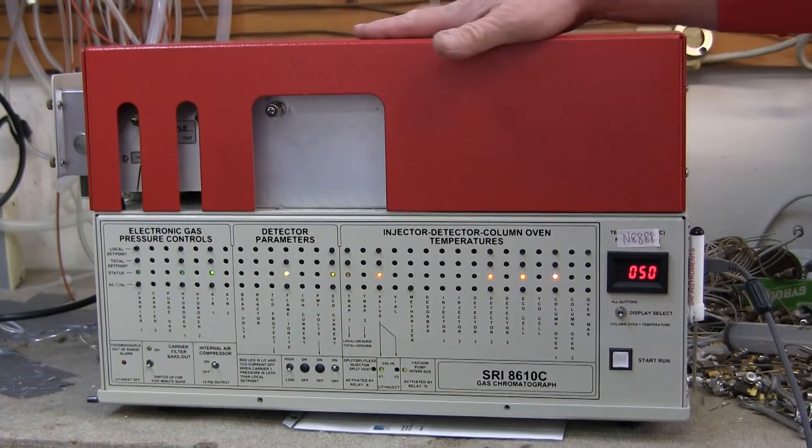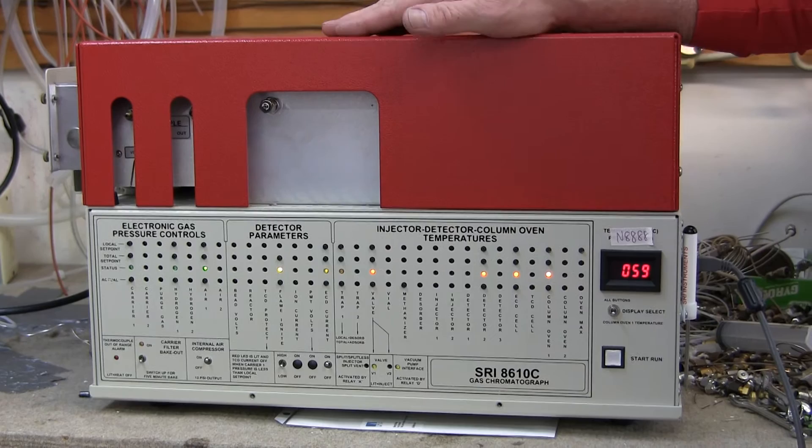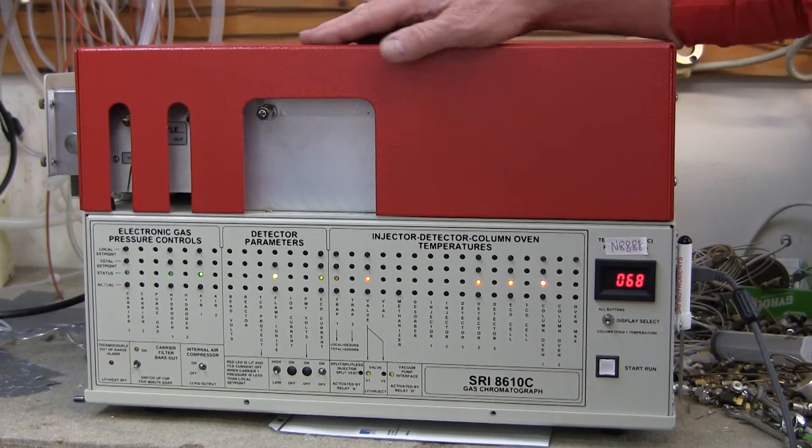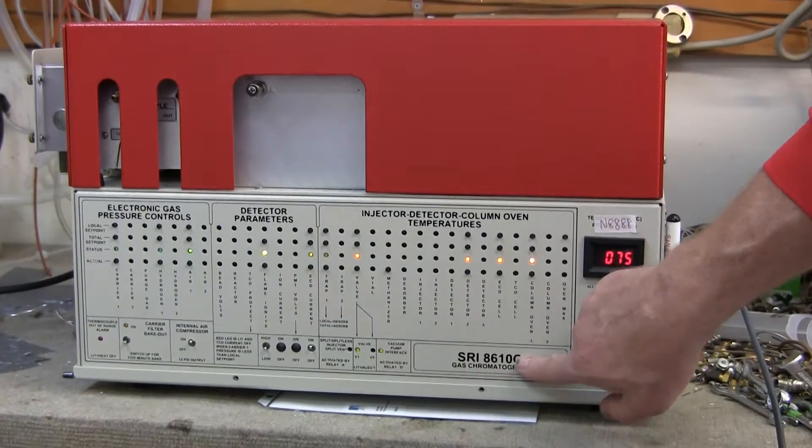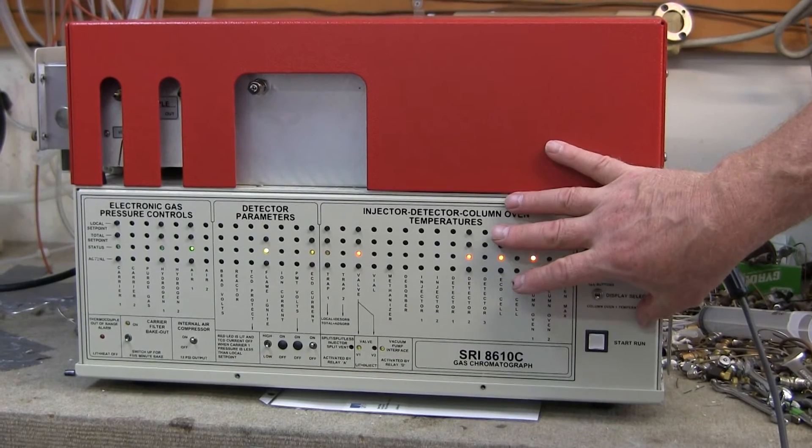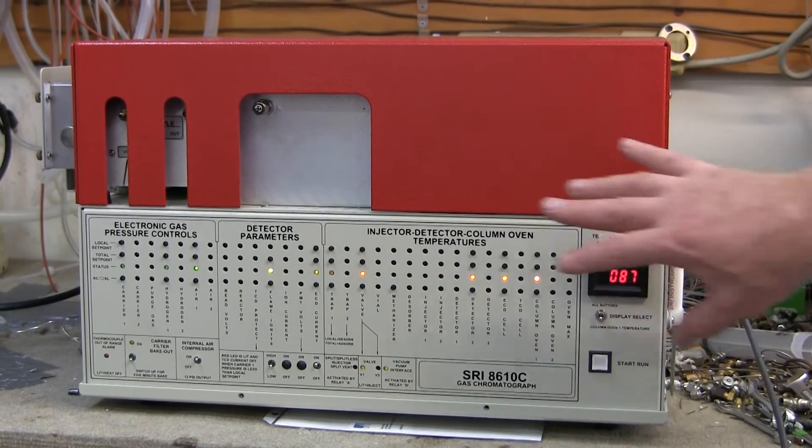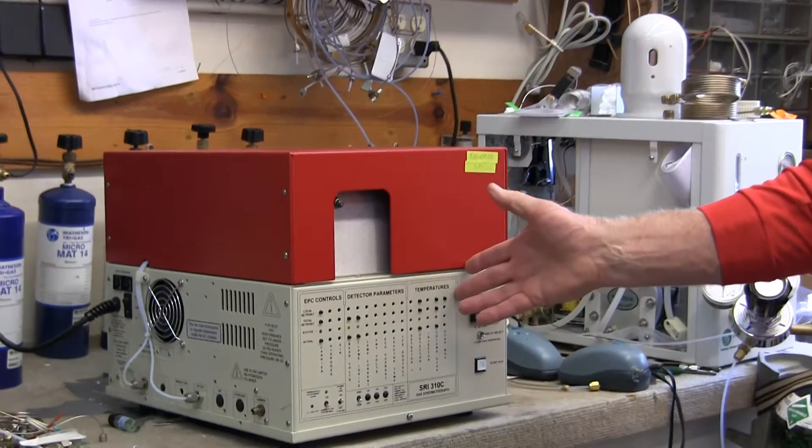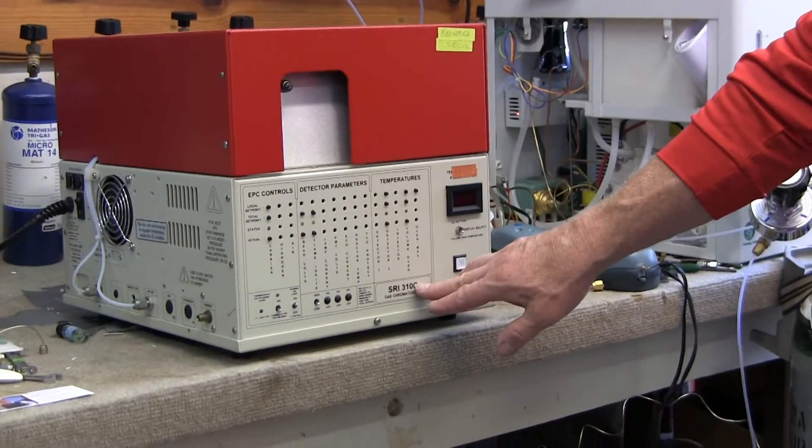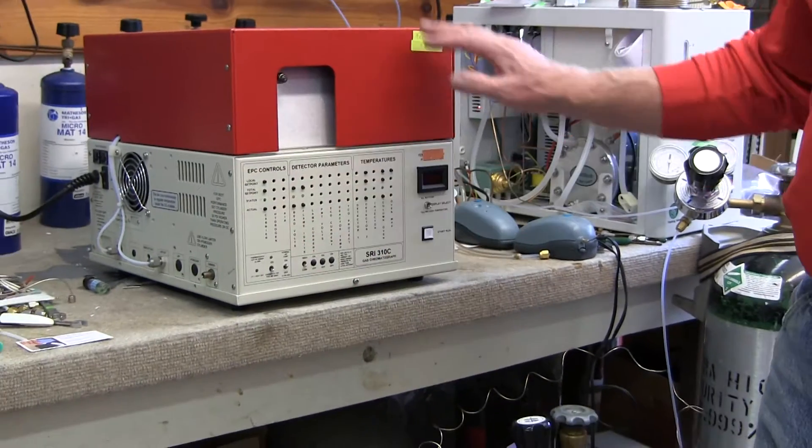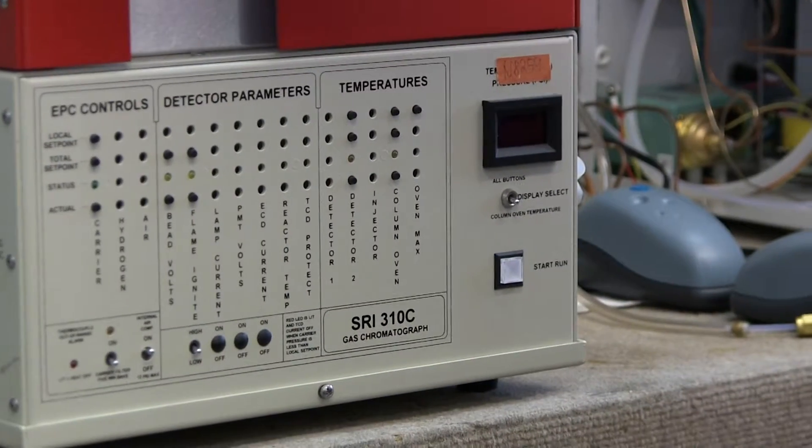All right, this is the SRI model 8610C GC. The model number really just refers to the size of the box. If you had a model 310, like this GC over here, it's really all the same. The model number refers to the size of the box that all the parts are mounted in.